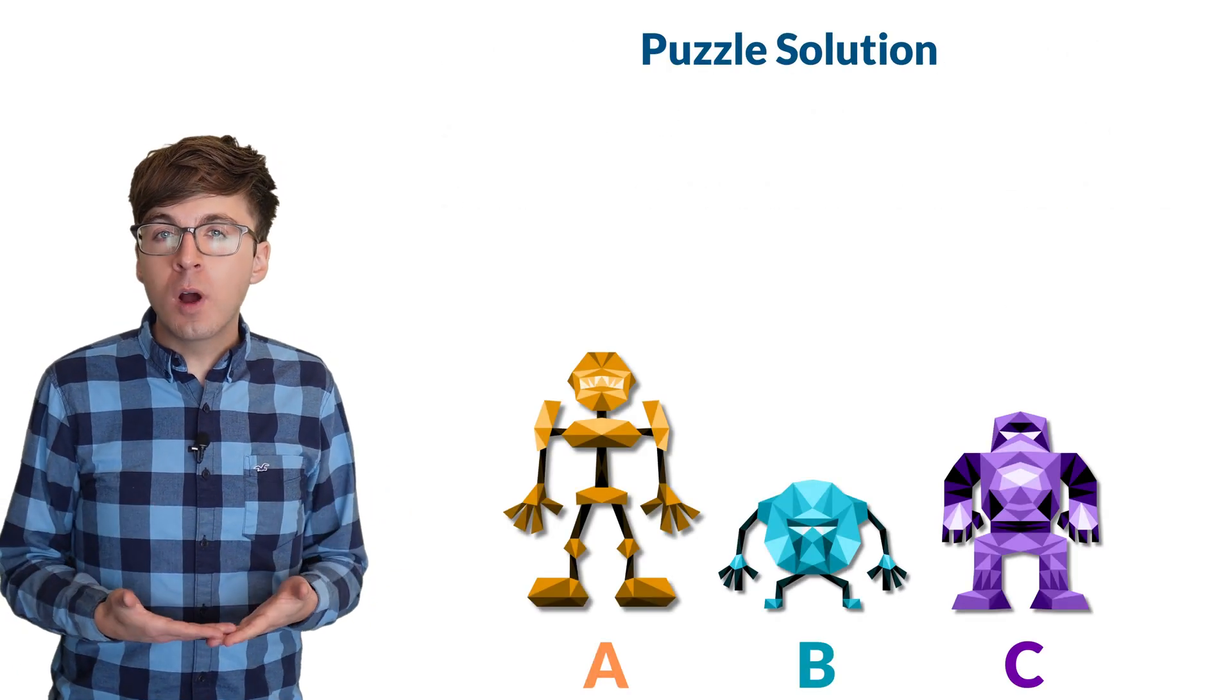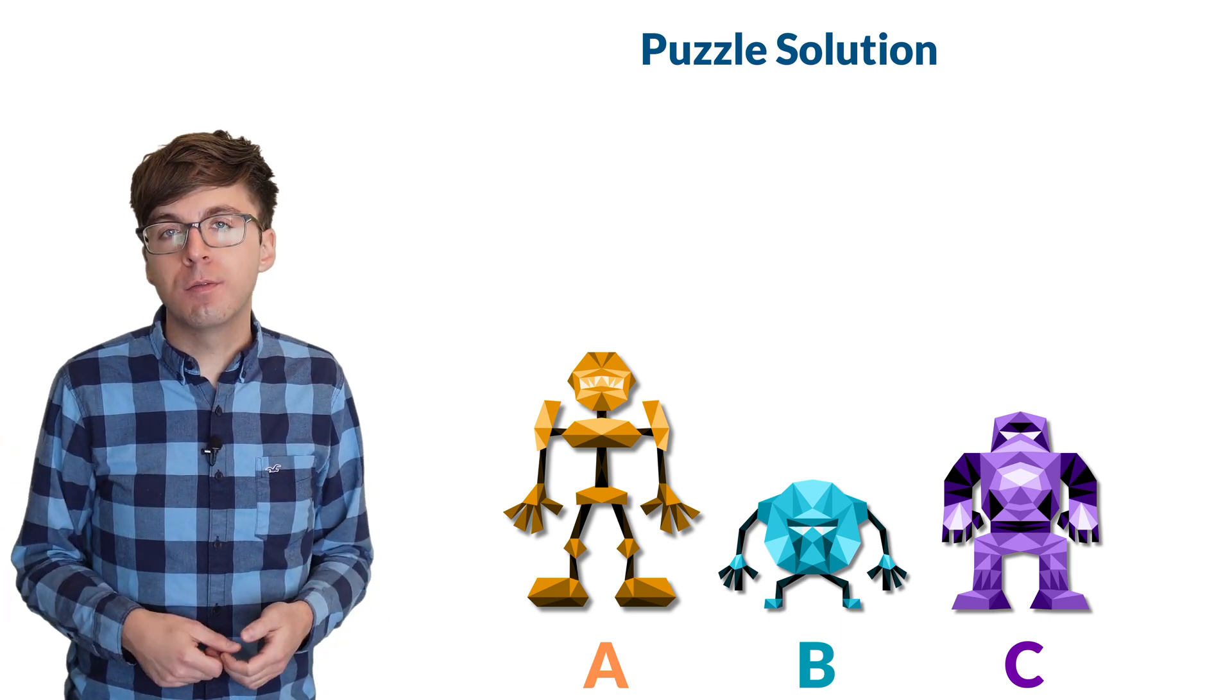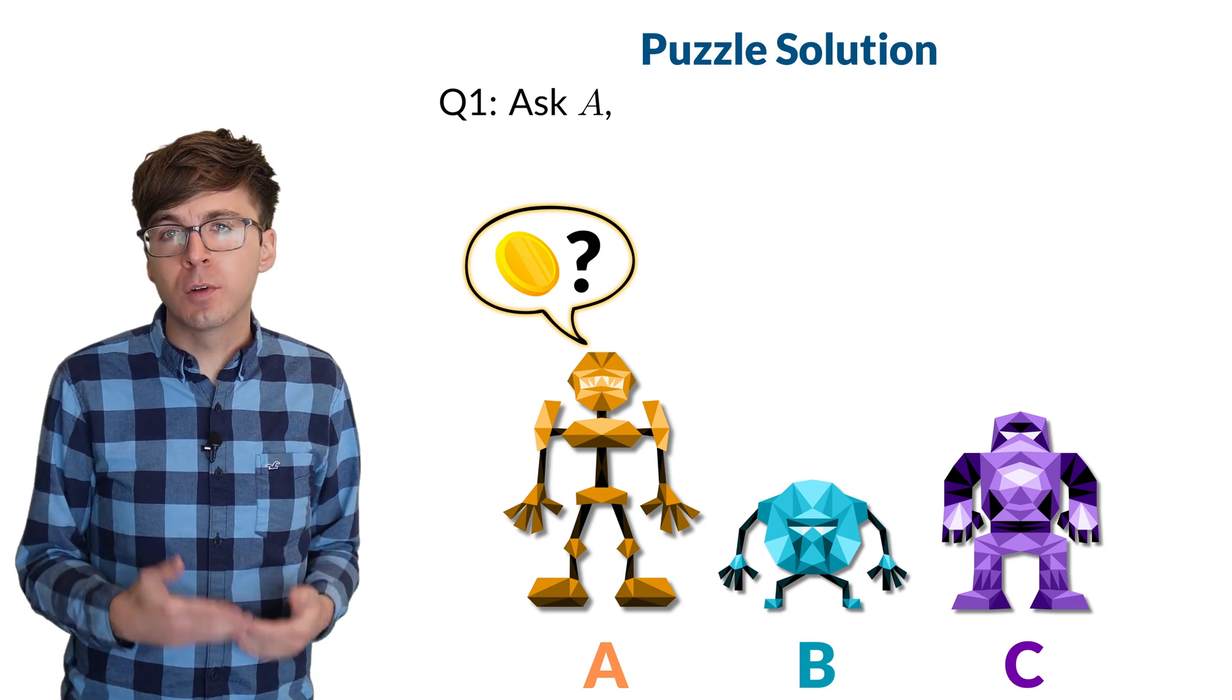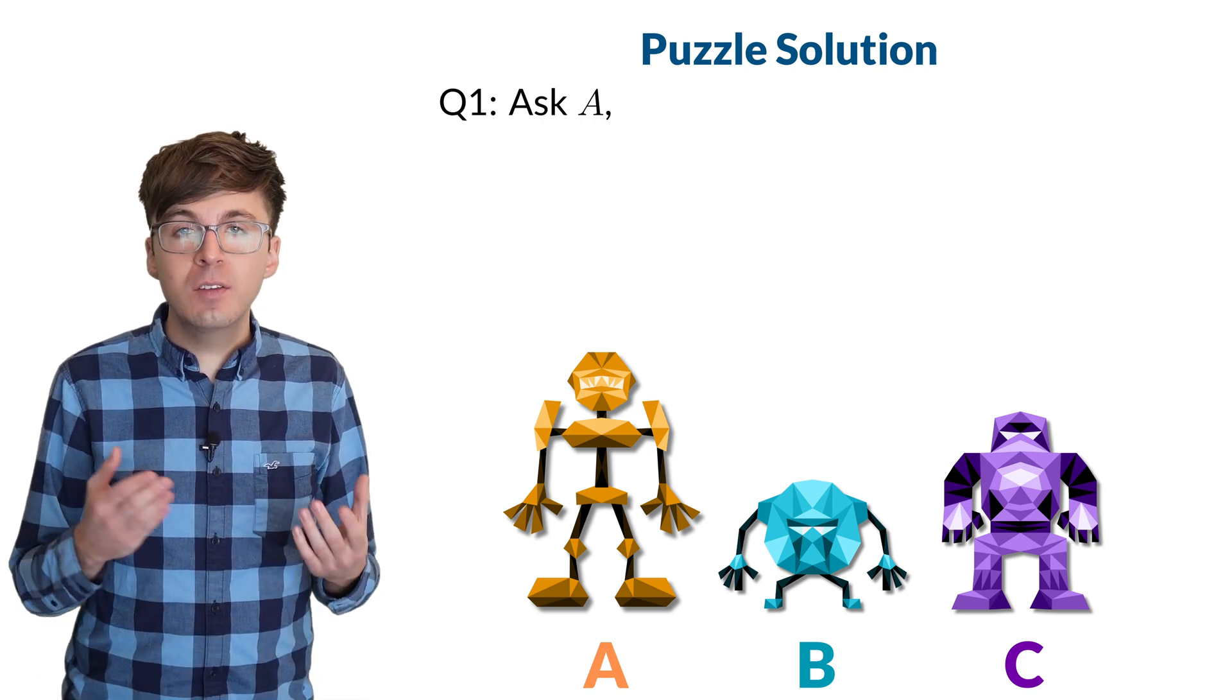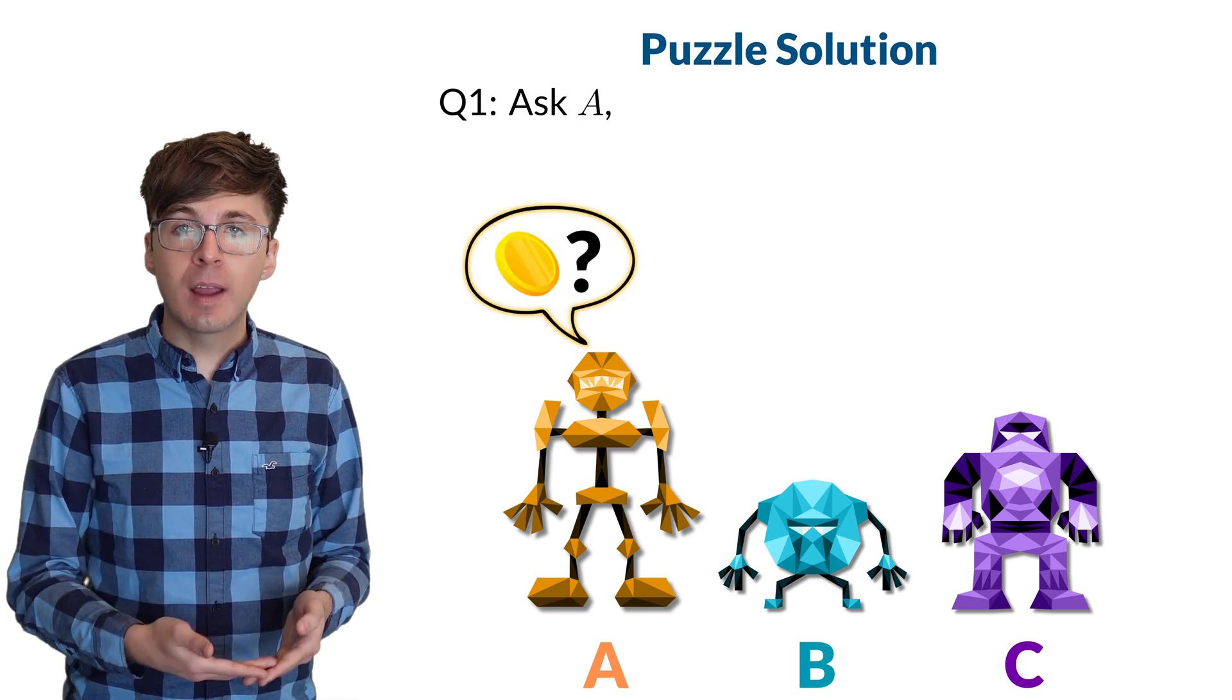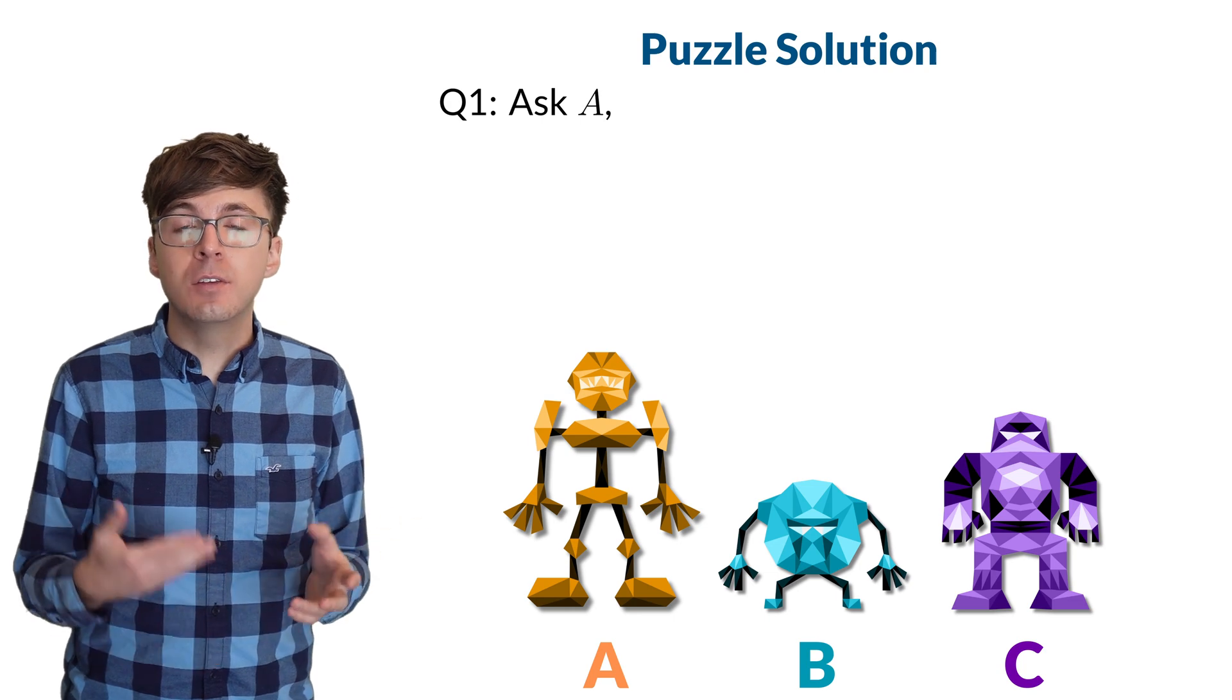First, we want to find one god who is definitely not random. After we find one, then we can ask counterfactual questions to see if any question Q is true or false. Let's say we ask A the first question. The key is that A might be random, so we won't be able to gain perfect information in our first question. So let's try to figure out whether B or C is not random. Based on A's answer, we'll pick either B or C to ask the remaining questions. This is a key step because if A happened to be random, then either choice is fine. B and C are both not random in this case. Now we need to make sure that our choice works if A is either true or false.